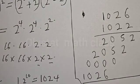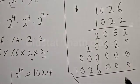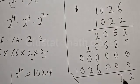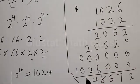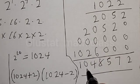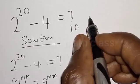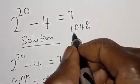Now let's add everything together. We get: 2, 7, 5, 8, 4, 0, and 1. Therefore our final answer is 1,048,572. Therefore 2 raised to power 20 minus 4 is equal to 1,048,572.